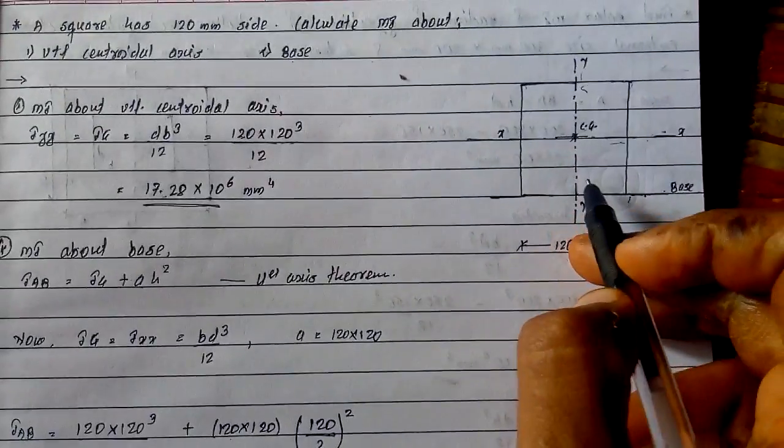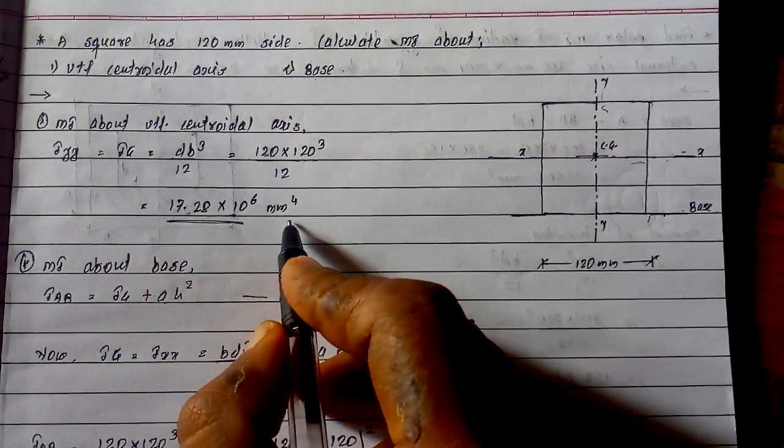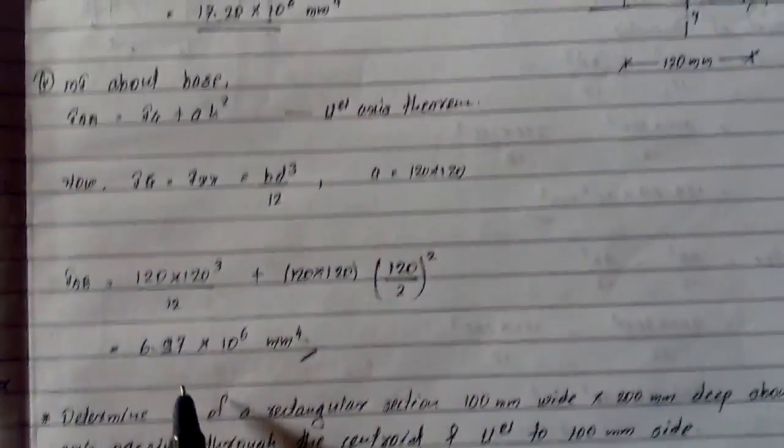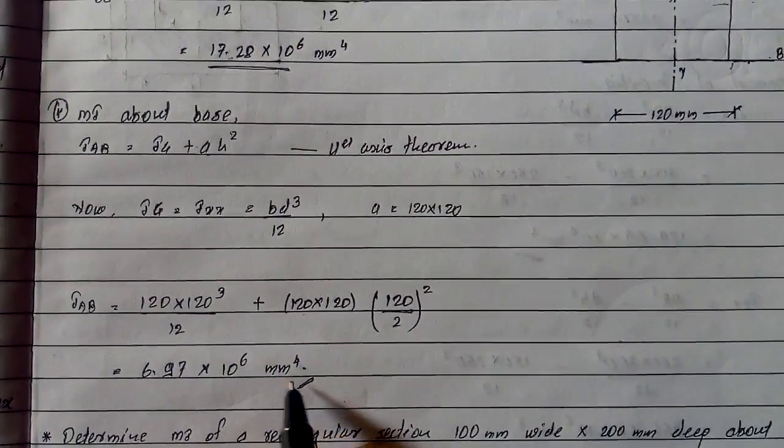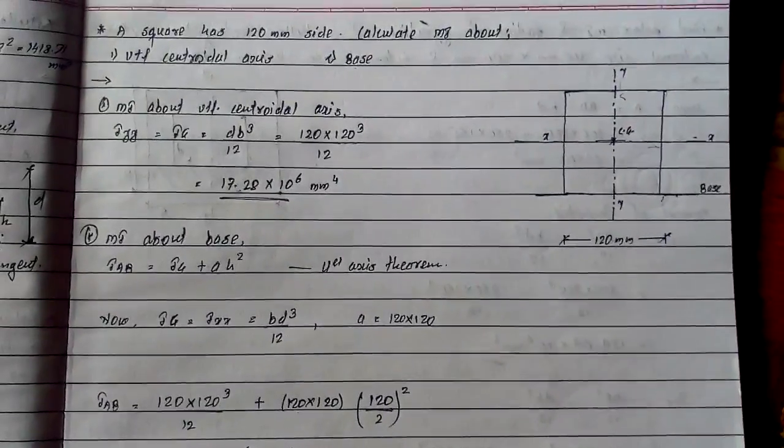So moment of inertia about yy axis is 17.28 × 10⁶ mm⁴, and moment of inertia about base is 6.97 × 10⁶ mm⁴. Thank you everyone.